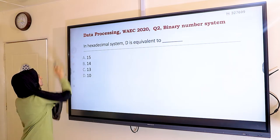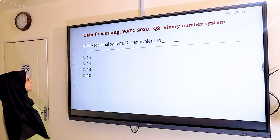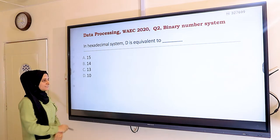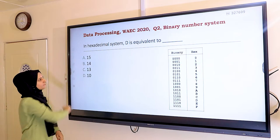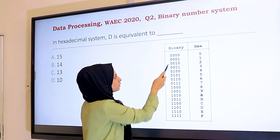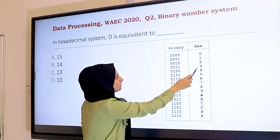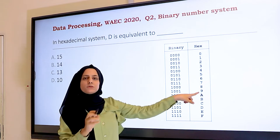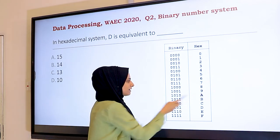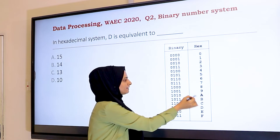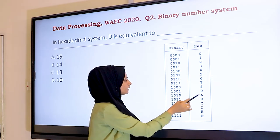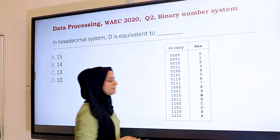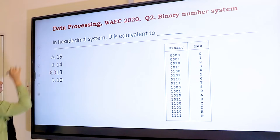Question two asks: in the hexadecimal system, D is equivalent to which number in decimal? Looking at the table, the digits 0–9 map directly to decimal 0–9. Then the letters begin: A represents 10, B is 11, C is 12, and D is 13. So the answer is 13.